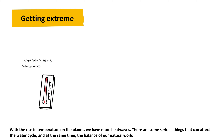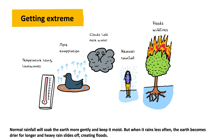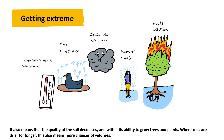With the rise in temperature on the planet, we have more heat waves. There are some serious things that can affect the water cycle and, at the same time, the balance of our natural world. As the oceans and the atmosphere get warmer, water turns to vapor faster. Warmer air can hold more water, meaning clouds can become larger, leading to much heavier rainfall, less often. Normal rainfall soaks the Earth more gently and keeps it moist, but when it rains less often, the Earth becomes drier for longer and heavy rain slides off, creating floods. It also means the quality of the soil decreases and its ability to grow trees and plants. When trees are drier for longer, this also means more chances of wildfires.